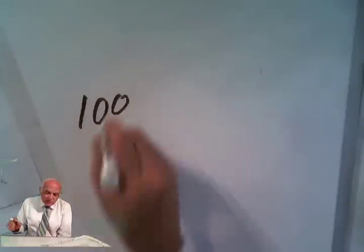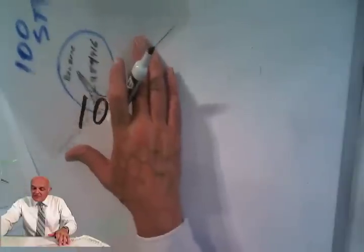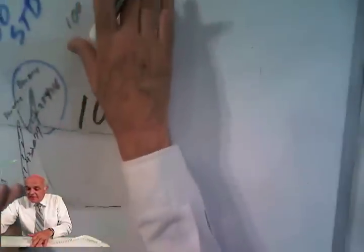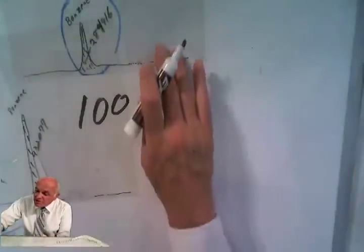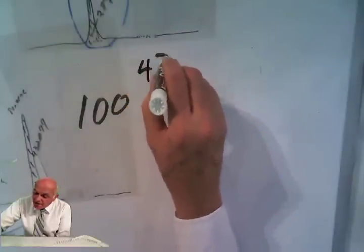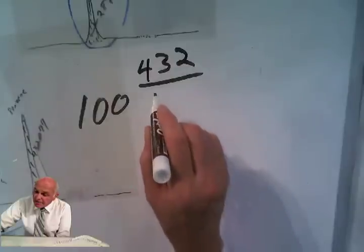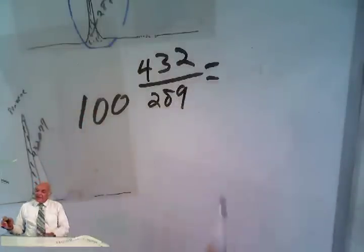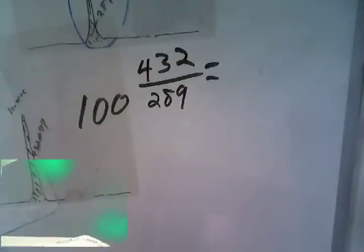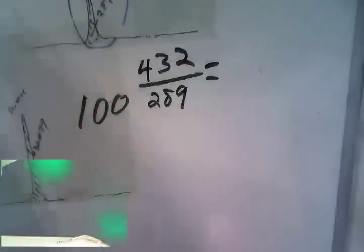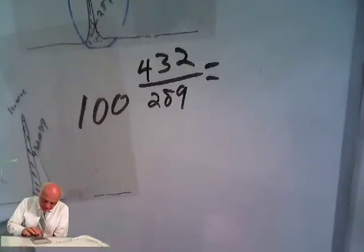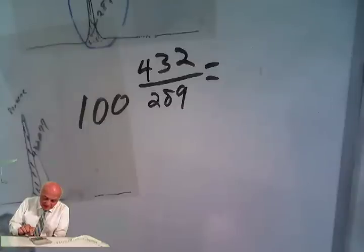This is the way I do it. I take the 100 and I say to myself, do I want a bigger number or a smaller number? I have a bigger peak in the sample than I had in the standard, so I want a bigger number. Let's make this number bigger. Let's multiply it by the big number and divide it by the small number. So, we get 100 times 432 divided by 289 and we get an answer of 149.